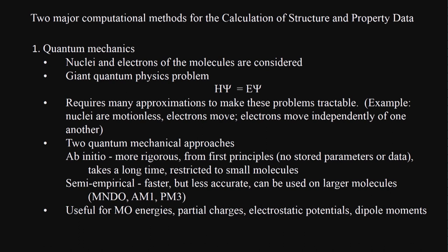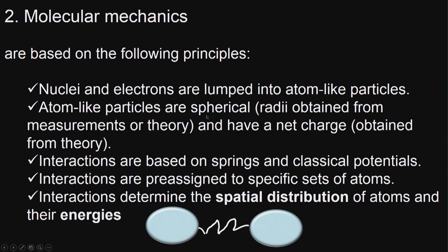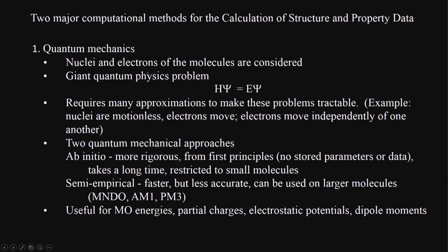Two major computational methods: quantum mechanics and molecular mechanics or force field. In quantum mechanics, nuclear and electrons of the molecules are considered — it differentiates electrons and nucleus. It is a giant quantum physics problem that requires many approximations because if I am going to work with a molecule with thousands of atoms, I cannot go very deep into quantum mechanics. I have to use many approximations to make these problems tractable — for example, assuming nucleus is motionless, electrons move, electrons move independently of one another.